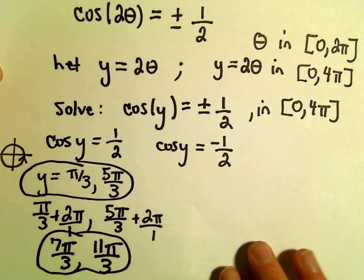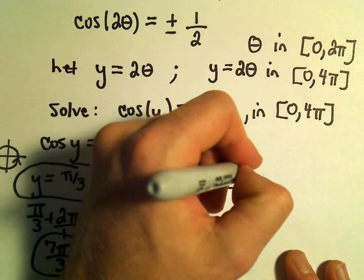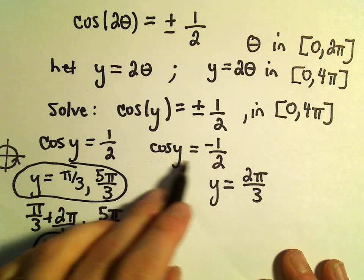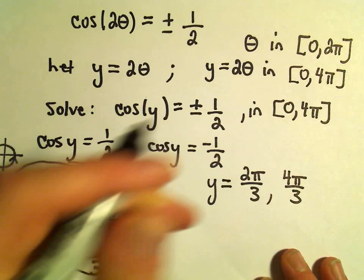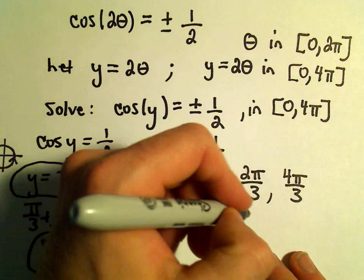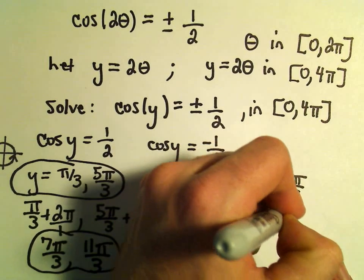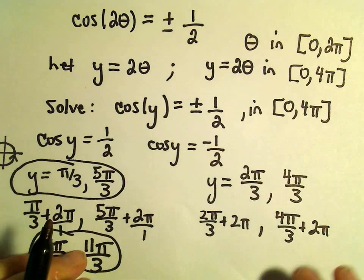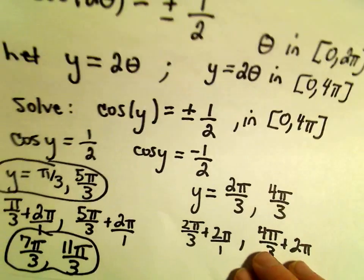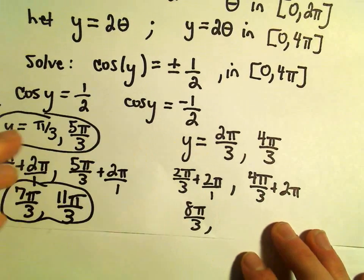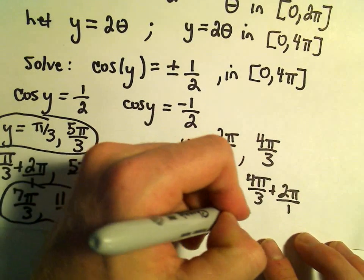We also have to figure out where cosine y equals negative 1/2. That happens at 2π/3 and at 4π/3. Again, since our interval is 0 to 4π, we can add 2π to each of those. 2π/3 plus 2π gives 8π/3, and 4π/3 plus 2π gives 10π/3. So we have four more solutions: 2π/3, 4π/3, 8π/3, and 10π/3.